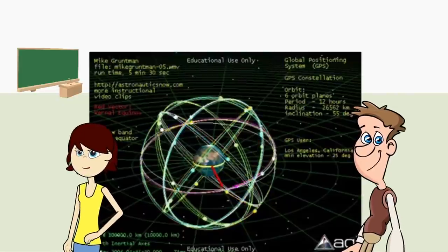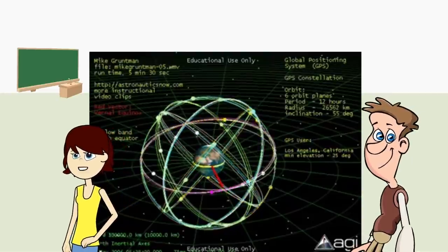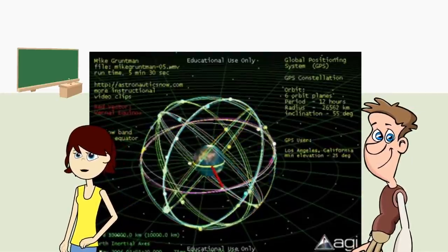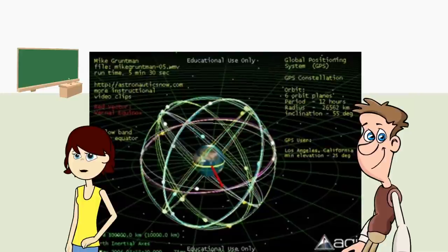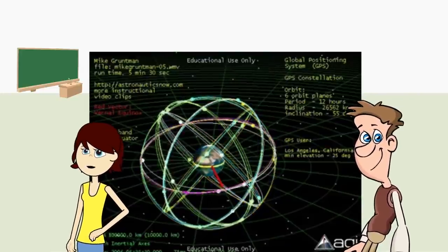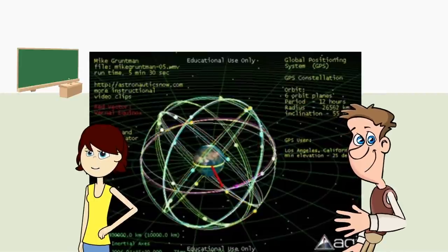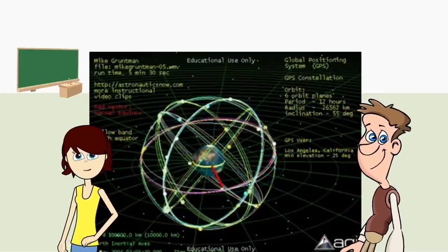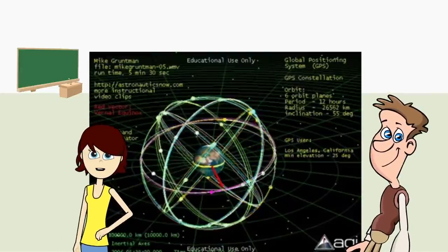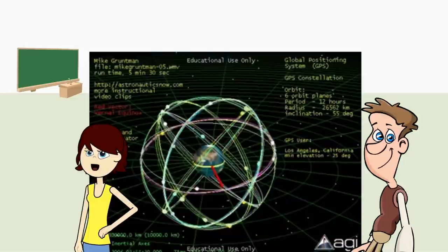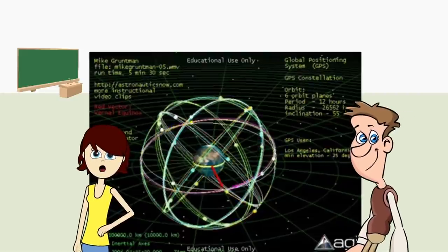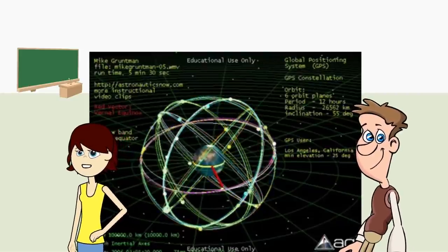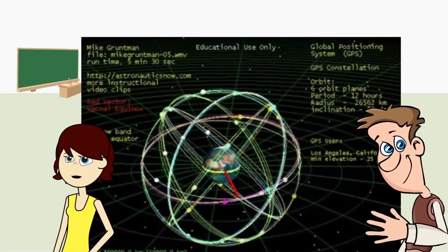Each satellite transmits a unique signal and orbital parameters that allow the GPS devices to decode and compute the precise location of the satellite. GPS receivers use this information and trilateration to calculate a user's exact location. Essentially, the GPS receiver measures the distance to each satellite by the amount of time it takes to receive a transmitted signal. With distance measurements from a few more satellites, the receiver can determine a user's position and display it electronically to your device, whether it's your phone, your watch, your Garmin device in your car, or a special GPS device.